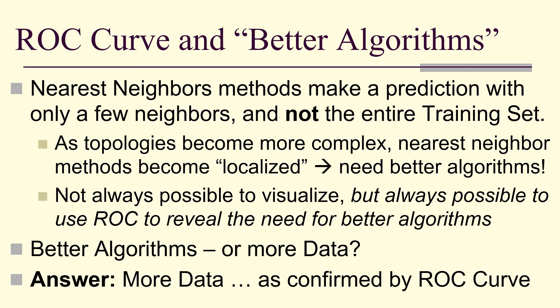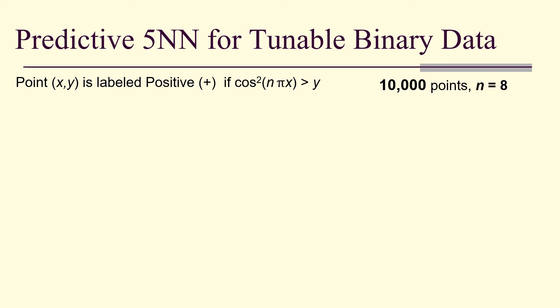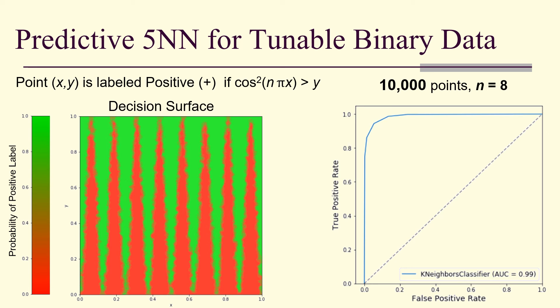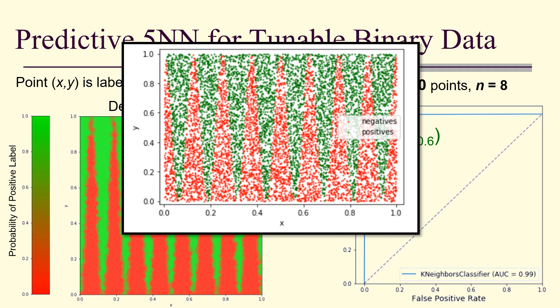Going back to 5 nearest neighbors but increasing to 10,000 points with n=8, the decision surface recovers much of the detail lost with only 1,000 points. The ROC curve returns to a high area under the curve. You can see from the data itself that more data gives us better results.